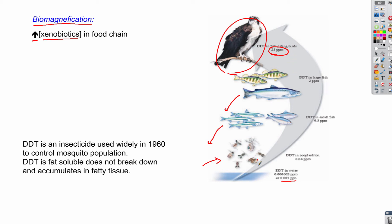There is a drastic increase in the amount of this xenobiotic, and this is known as biomagnification. DDT was used extensively as an insecticide in the 1960s and was banned before 1970. It is also fat-soluble, which is another problem — it doesn't break down and gets accumulated in our fatty tissues. So biomagnification is the increase of xenobiotics in the food chain.